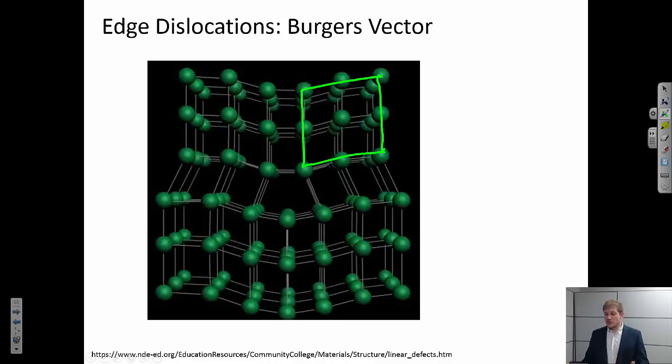If I, however, tried to do the same thing around a dislocation, that circuit will no longer close. And the Burgers vector is the vector that completes the circuit, essentially.